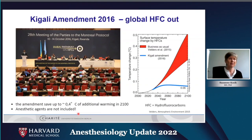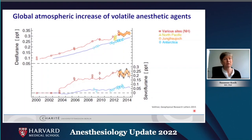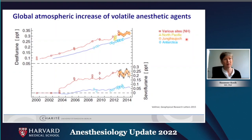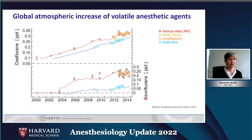A study by Follmer in 2015 showed that volatile anesthetic agents are being detected and increasing in the atmosphere worldwide — including measurements of desflurane in the North Pacific, at the Jungfraujoch mountain in Switzerland, and in Antarctica. Since market introduction, sevoflurane and desflurane concentrations have been increasing.